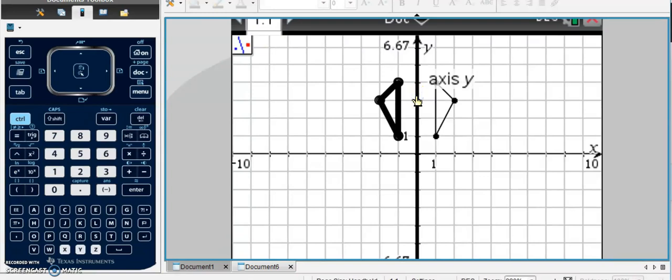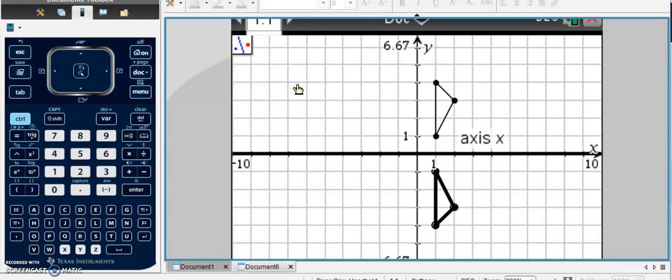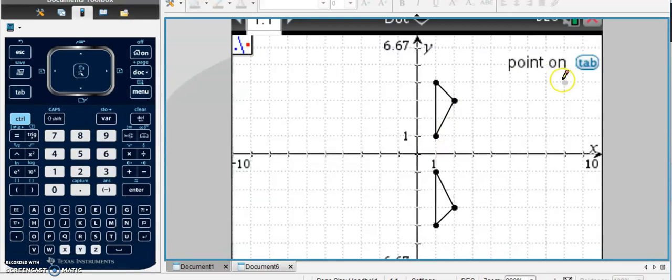and there is my reflection. If I want to undo that reflection, I can press Ctrl-Z, and it will undo it, and I can do another one. So I can click the triangle, and then I can click the X-axis, and there I have my reflection.